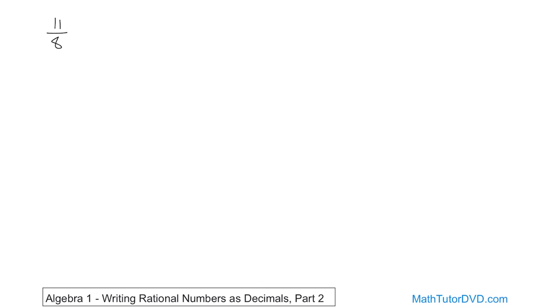The first one is 11 eighths. The first thing to think about is this is an improper fraction. So we know that the answer is going to be bigger than one because we have a bigger number on the top divided by eight. So let's work that out — essentially 11 divided by eight.